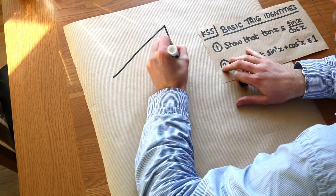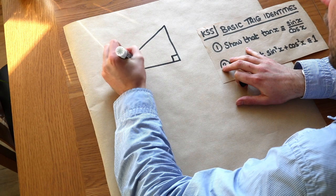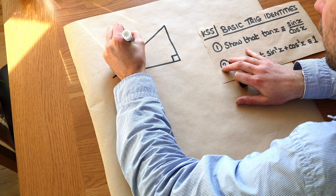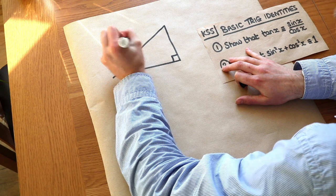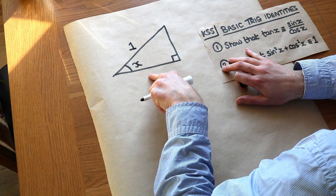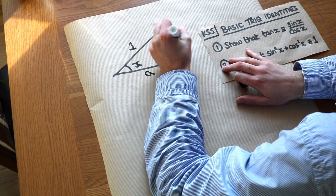Now imagine I was to have a right angle triangle like this, and let's just say that I made this angle here x and I was to make the hypotenuse of the triangle 1. Now let's use basic trigonometry to work out what this length is here and what this length is here. So let's make this a and let's make this b.